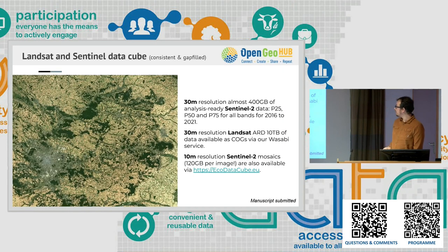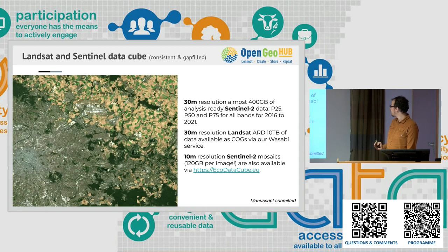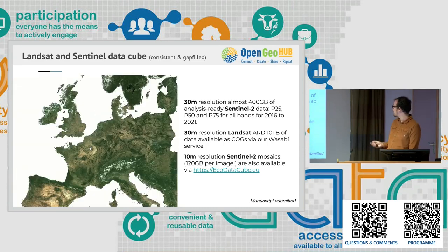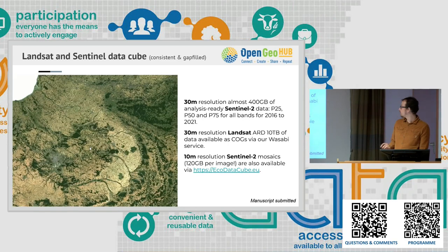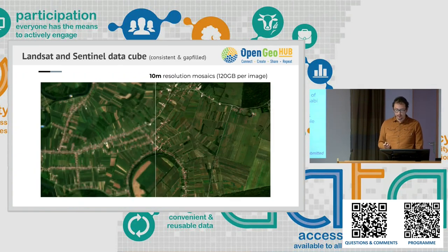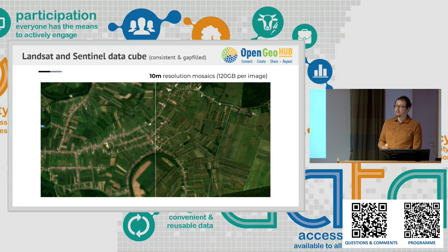We did the same for Sentinel data. We produced 30-meter resolution Sentinel composites, upscaling slightly to match Landsat, but we also produced 10-meter Sentinel true mosaics — one single image is about 120 gigabytes — available since 2018. All data is available as ARCO with the same land mask, removing ocean and water bodies.